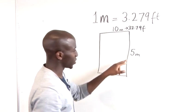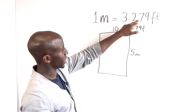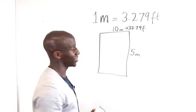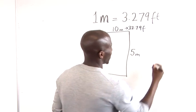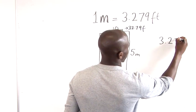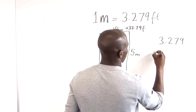Now if we want to multiply 5 by this, we can just either do it on our calculator but I don't have one handy so I'm going to have to go on the board. We just do 3.279 times 5.